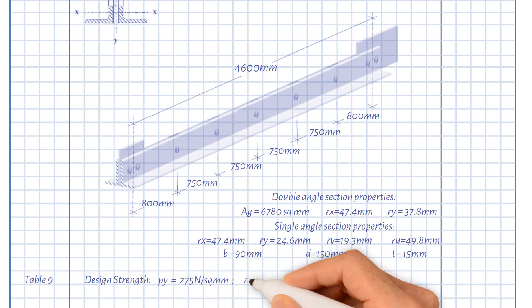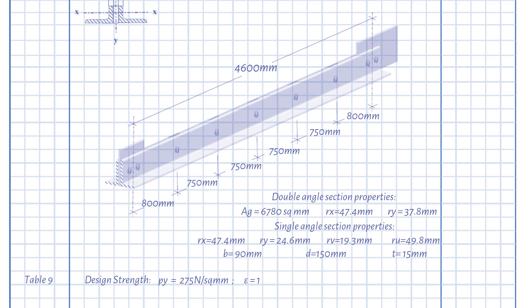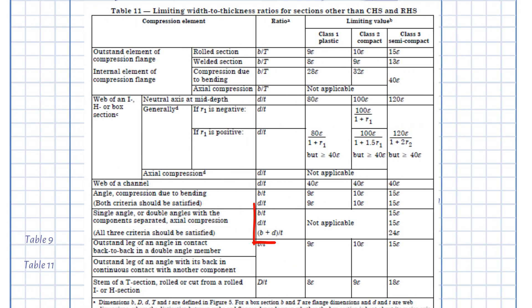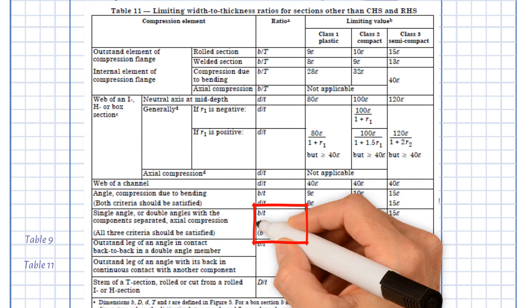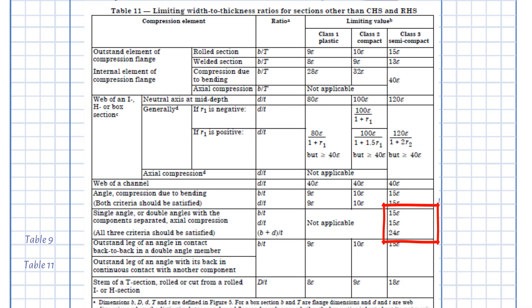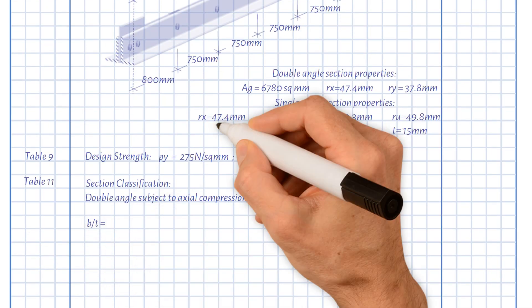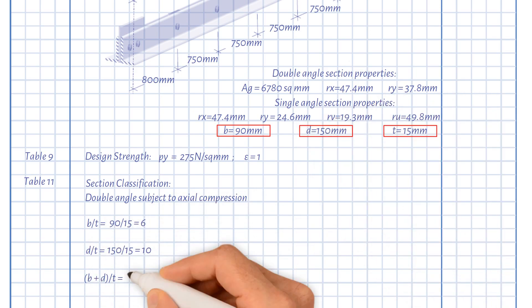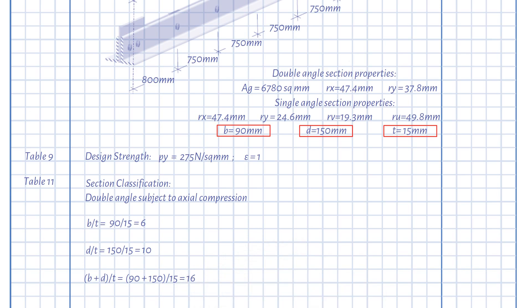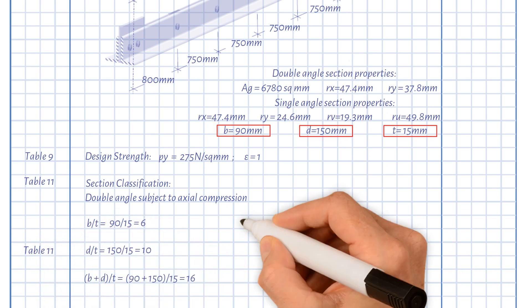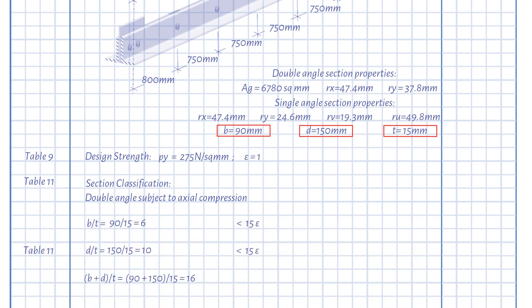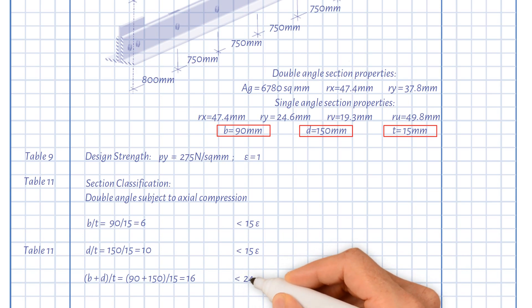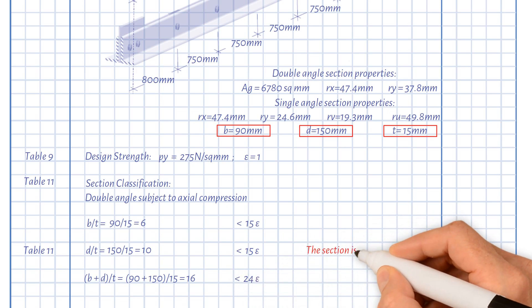Epsilon equals 1. Using Table 11, checking section classification for a double angle subject to axial compression: b/t equals 6, d/t equals 10, and (b+d)/t equals 16. Since b/t and d/t are less than 15ε, and (b+d)/t is less than 24ε, the section is not slender.